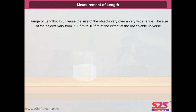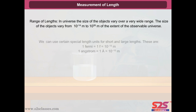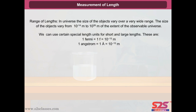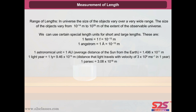Range of lengths: in the universe, the size of objects varies over a very wide range, from 10 to the power of minus 14 meters to 10 to the power of 26 meters, the extent of the observable universe. Special length units include: 1 Fermi (1F) = 10⁻¹⁰ m; 1 Astronomical Unit (average distance of the sun from the earth) = 1.496 × 10¹¹ m; 1 Light-year = 9.46 × 10¹⁵ m; 1 Parsec = 3.08 × 10¹⁶ m.